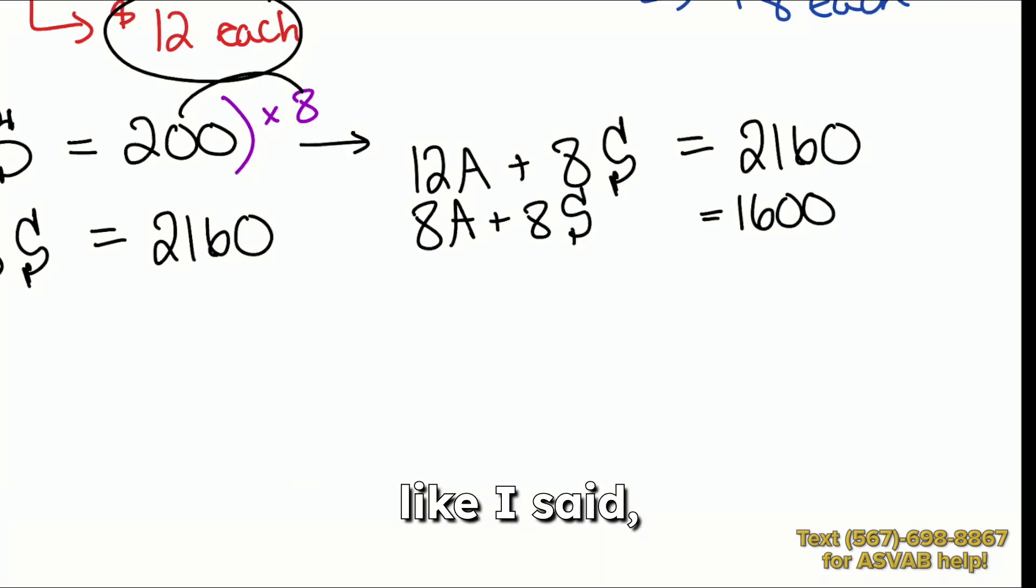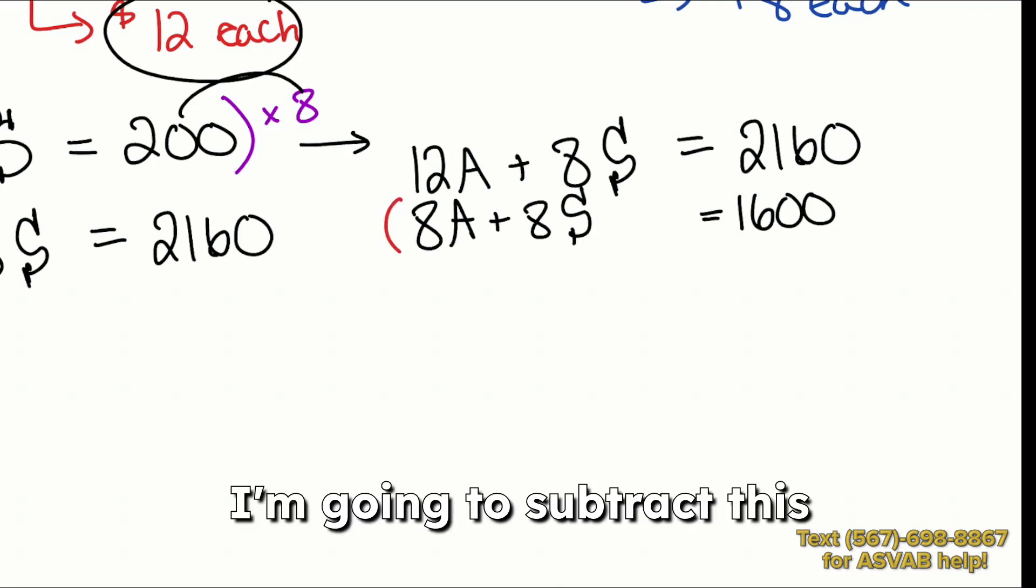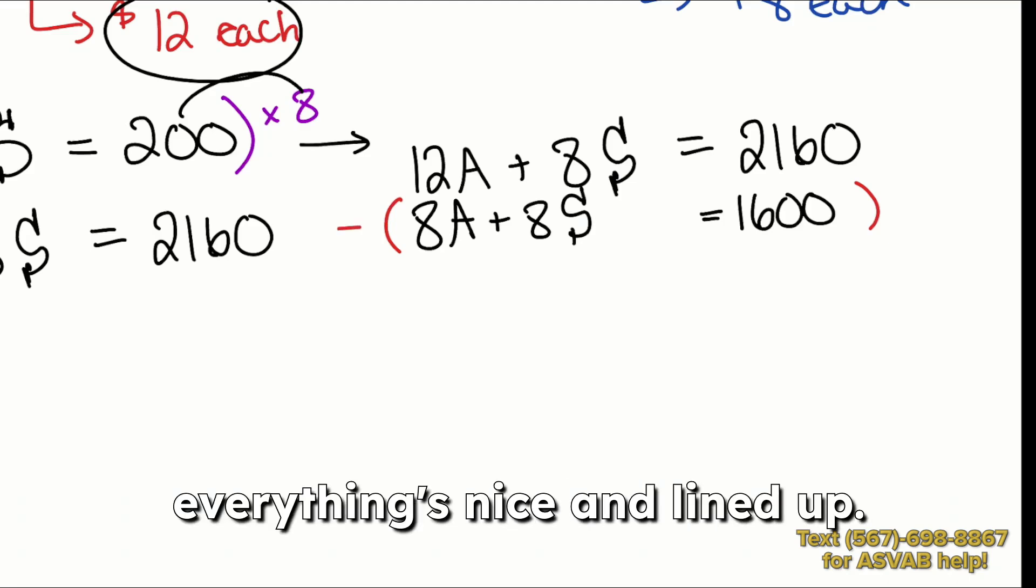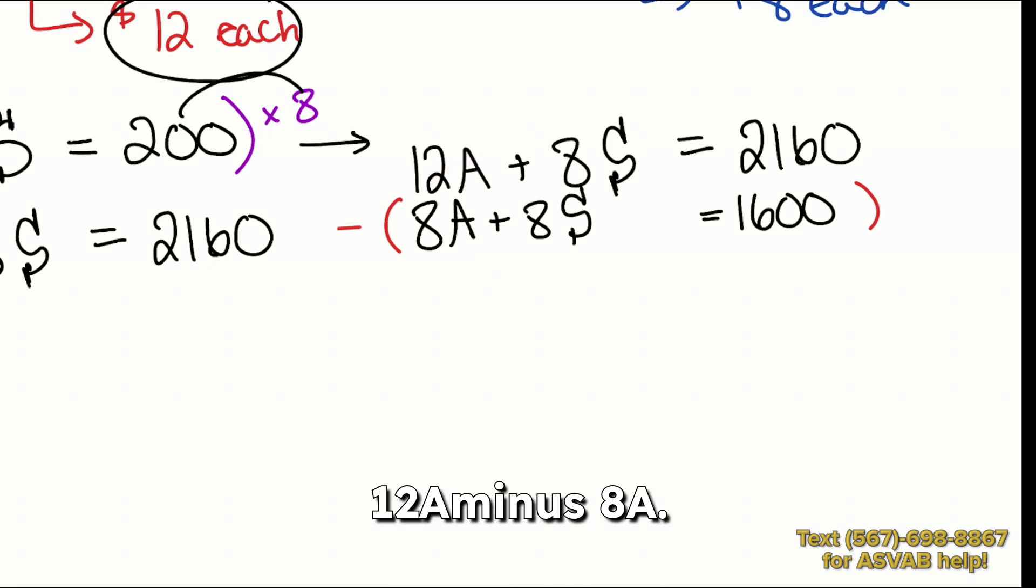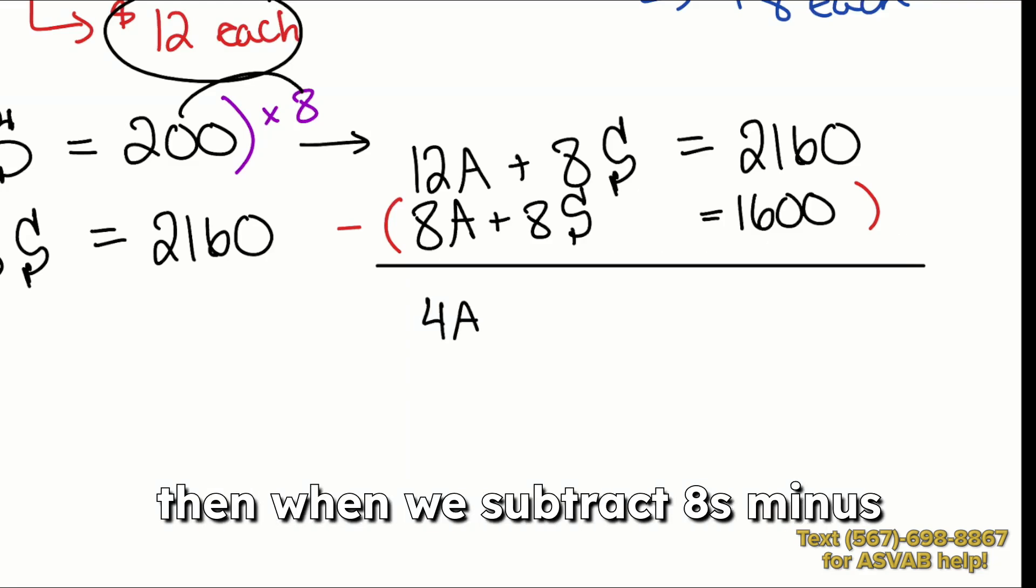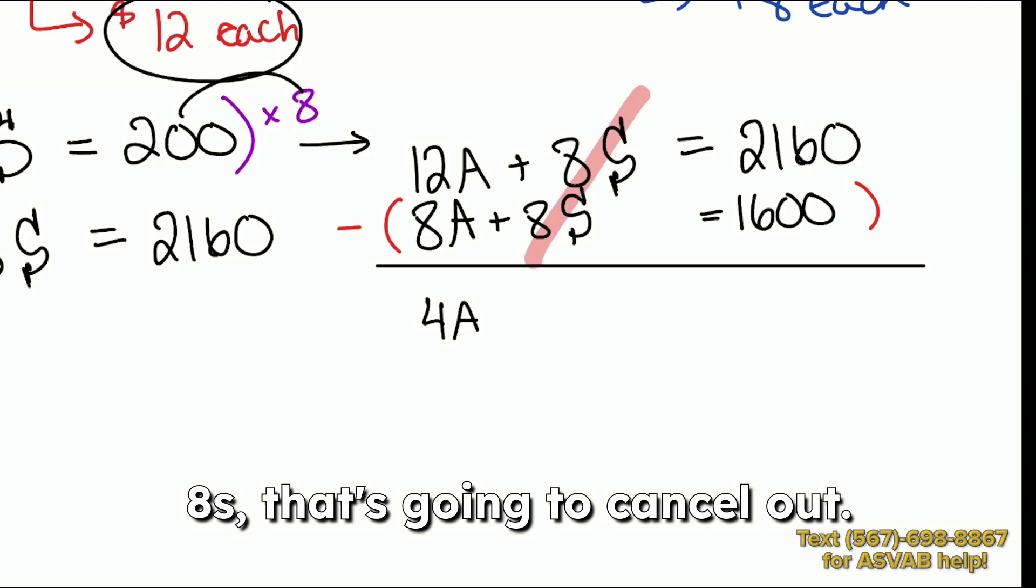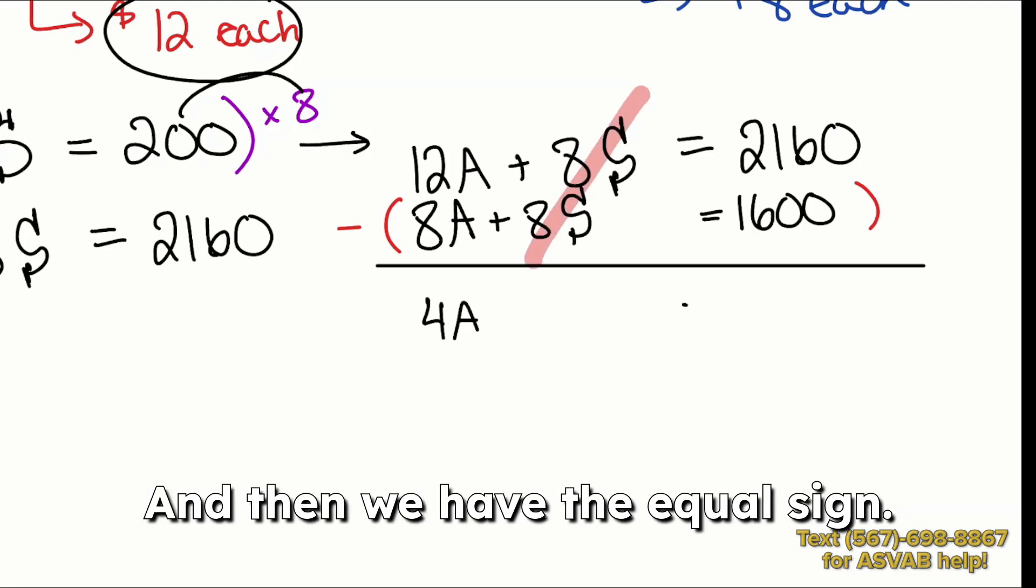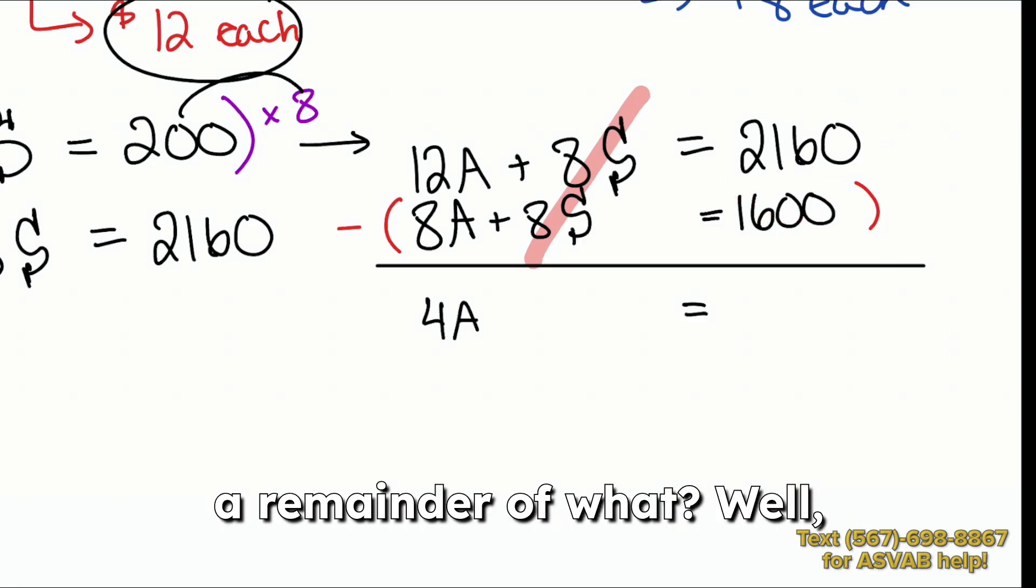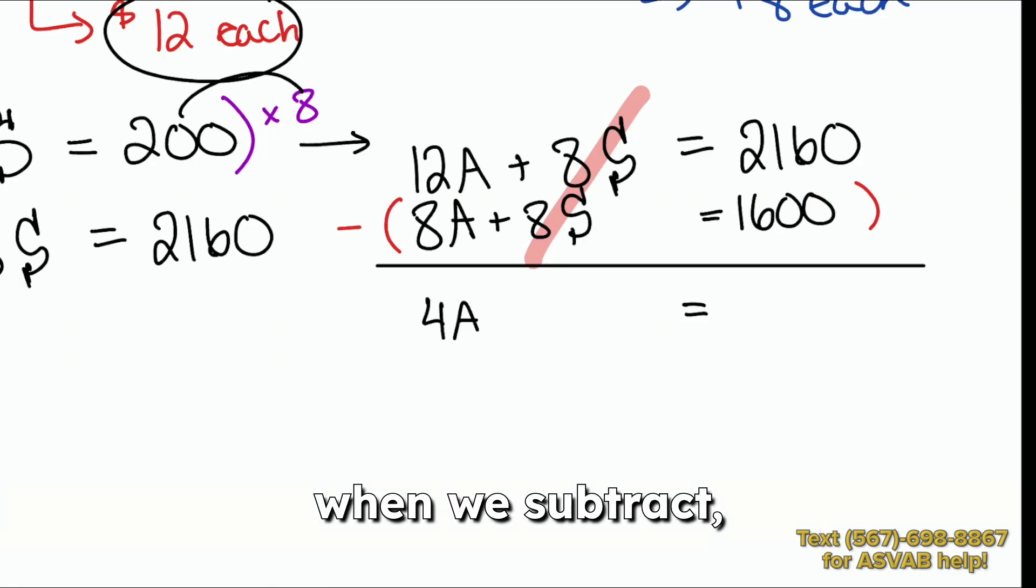So from here, I'm going to subtract this entire equation from the top one. So just take a look how everything's nice and lined up. 12A minus 8A, that's going to give us a remaining four of those A's. Then when we subtract 8S minus 8S, that's going to cancel out. And then we have the equal sign. And on the right side, we'll have 2160 minus 1600. And that's going to give us a remainder of 560.